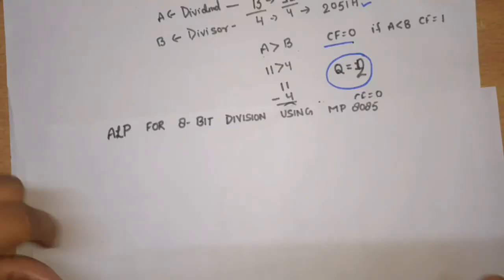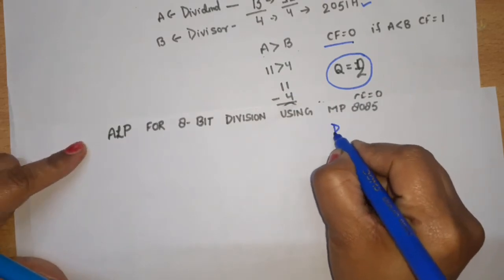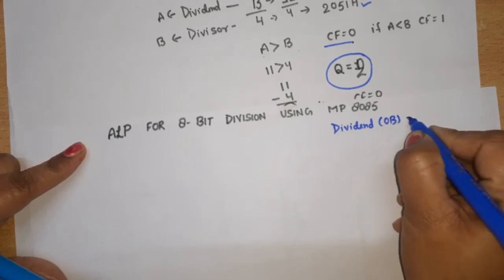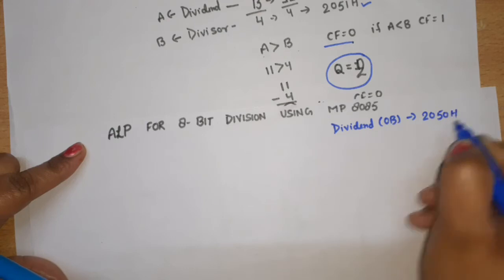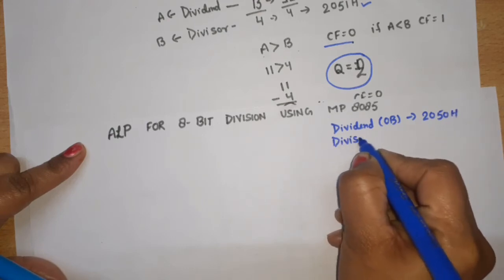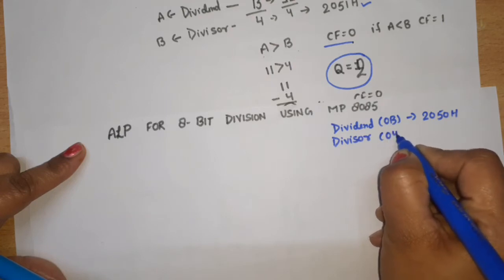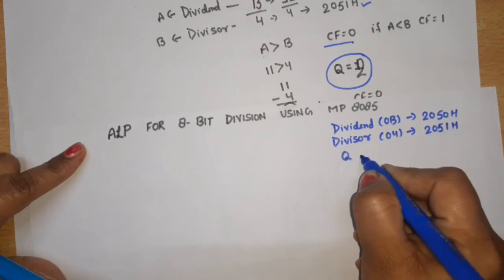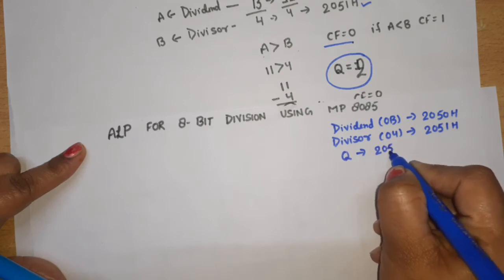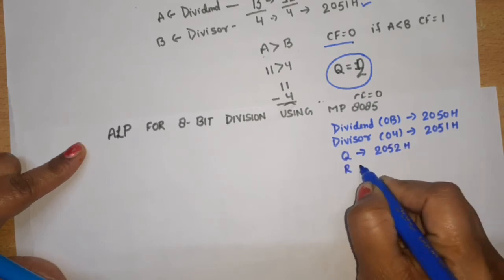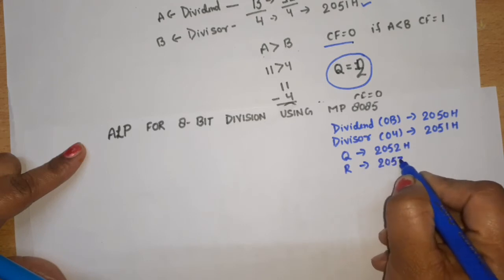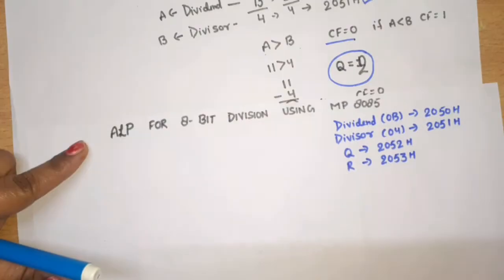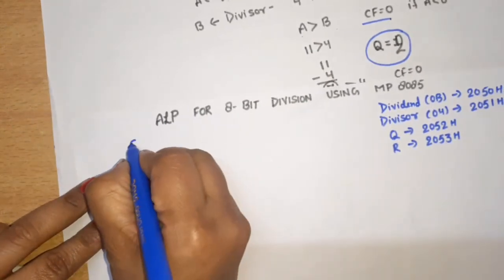So we will start with the flowchart. For the flowchart we need our numbers: the dividend was 0B in hex, stored at 2050H. Then the divisor was 04, stored at 2051H. The quotient will be stored at 2052H, and the remainder will be stored at 2053H. Keeping this in mind, let's write the program. First step: Start.